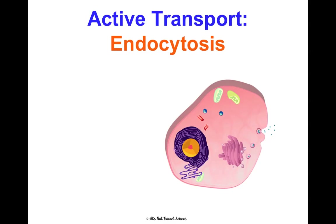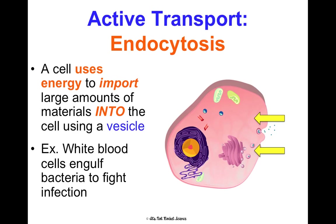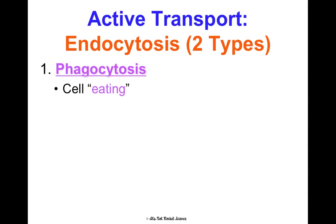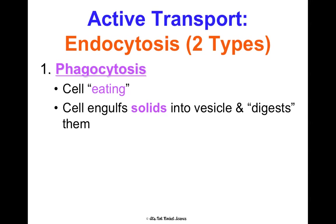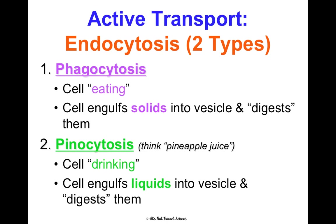Endocytosis — endo means in, cyto means cytoplasm — is when a cell uses energy to import materials into the cell using a vesicle. An example is white blood cells engulfing bacteria to fight infections. There are two types: phagocytosis, or cell eating, where the cell engulfs solids into a vesicle and digests them; and pinocytosis — think pineapple juice — which is cell drinking, where the cell engulfs liquids into a vesicle and digests them. So phago for solids, pino for liquids.